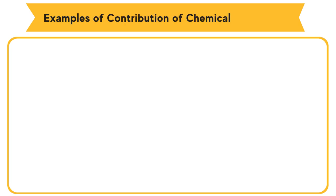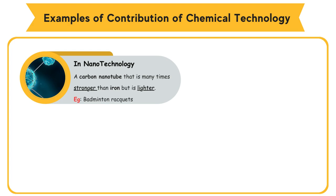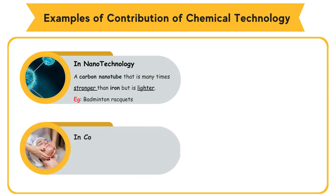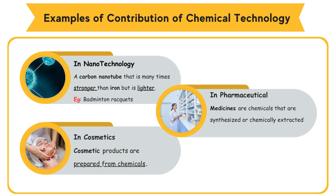Examples of contribution of chemical technology. In nanotechnology, a carbon nanotube that is many times stronger than iron but lighter has been developed. Badminton rackets made from carbon nanotube are lighter and stronger. Cosmetic products are prepared from chemicals. Medicines are chemicals that are synthesized or chemically extracted from natural substances.